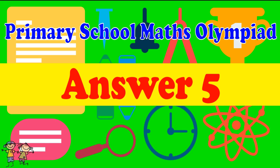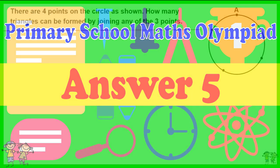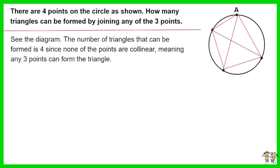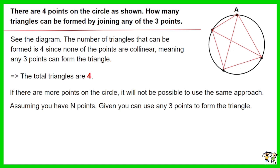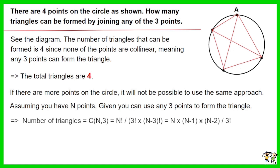Answer for Question 5. See the diagram. The number of triangles that can be formed is 4, since none of the points are collinear, meaning any 3 points can form a triangle. Thus the answer is 4. If there are more points on the circle, it will not be possible to use the same approach. Assuming you have n points, given you can use any 3 points to form a triangle, the number of triangles can be calculated using the combination formula NC3.